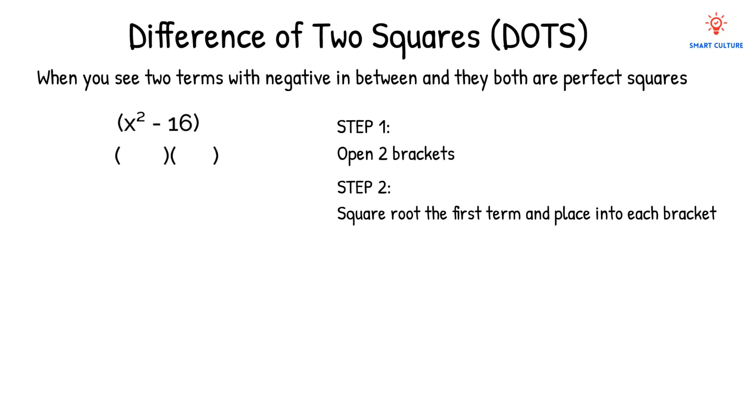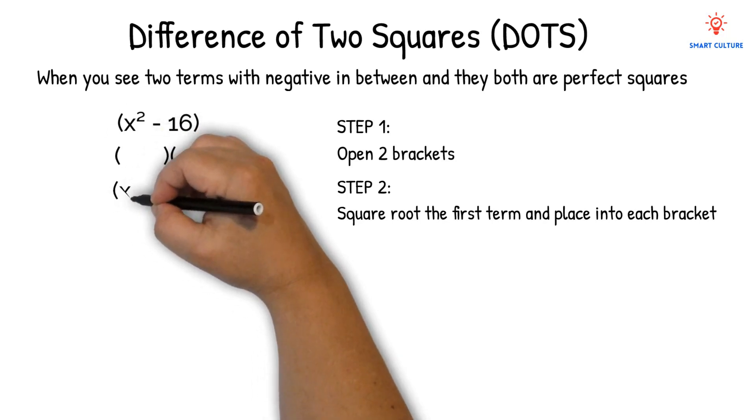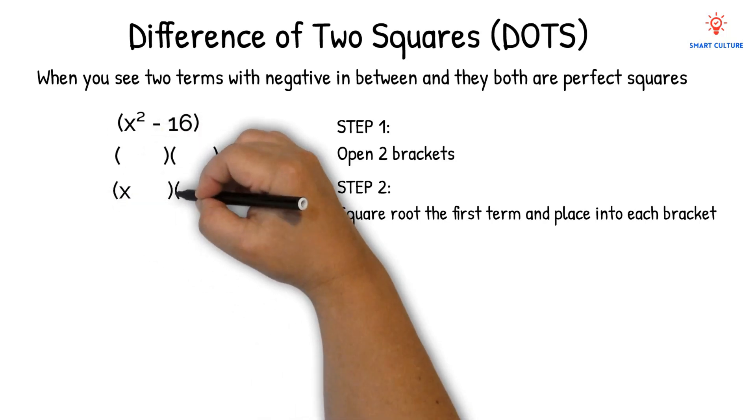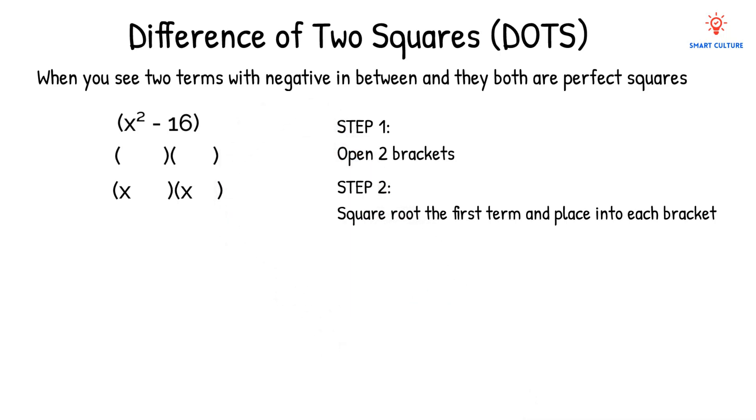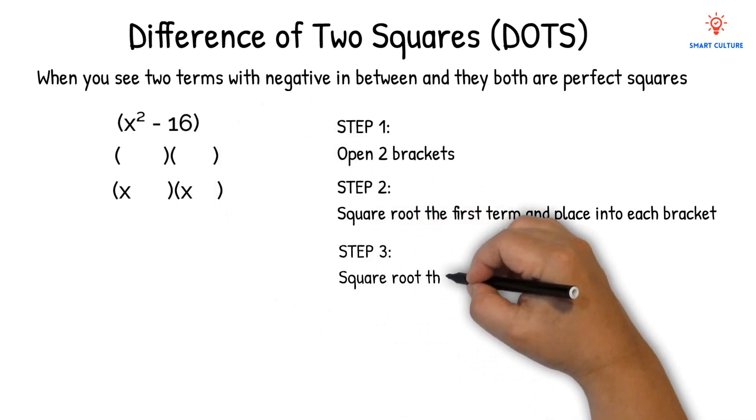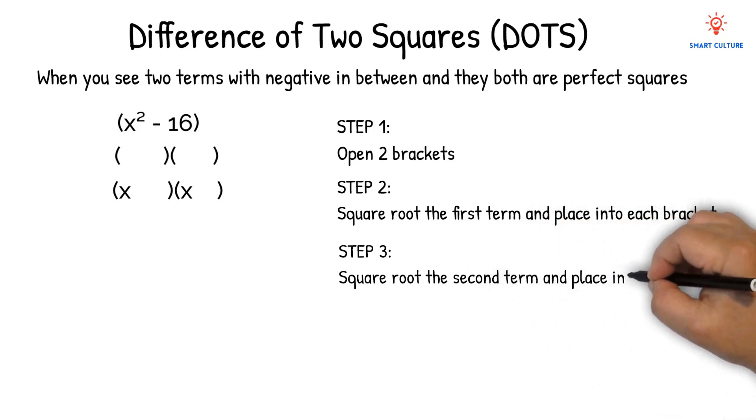What is the square root of x squared? X. So we will place x in each bracket. Step 3: Square root the second term and place it into each bracket.